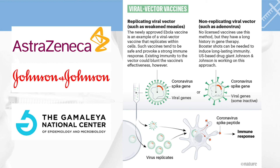The second type is the viral vector vaccine. The concept here is that a harmless virus — for example, a harmless adenovirus — contains the gene of the coronavirus, specifically the spike protein gene. When this vaccine is given to a patient, the person develops an immune response to the coronavirus spike protein. Current vaccine candidates using this technology are those produced by AstraZeneca, Johnson & Johnson, and Gamaleya. A previous vaccine that also used this technology is the Ebola vaccine.